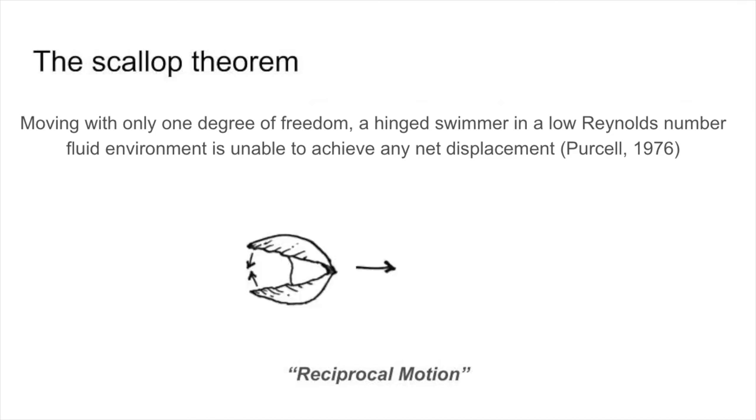With the absence of inertial forces, the swimmer is confined by the one degree of freedom in its own motion, and the resulting motion will be reciprocal, as we see here, only moving back and forth and back and forth, but never anywhere else.